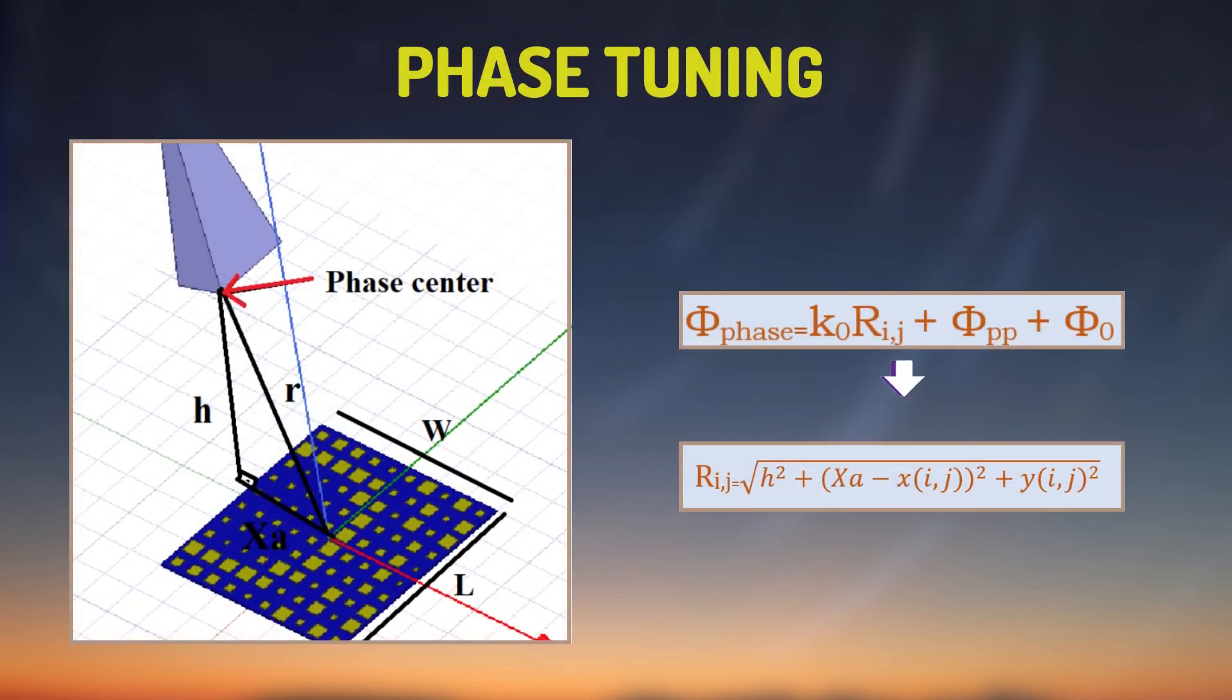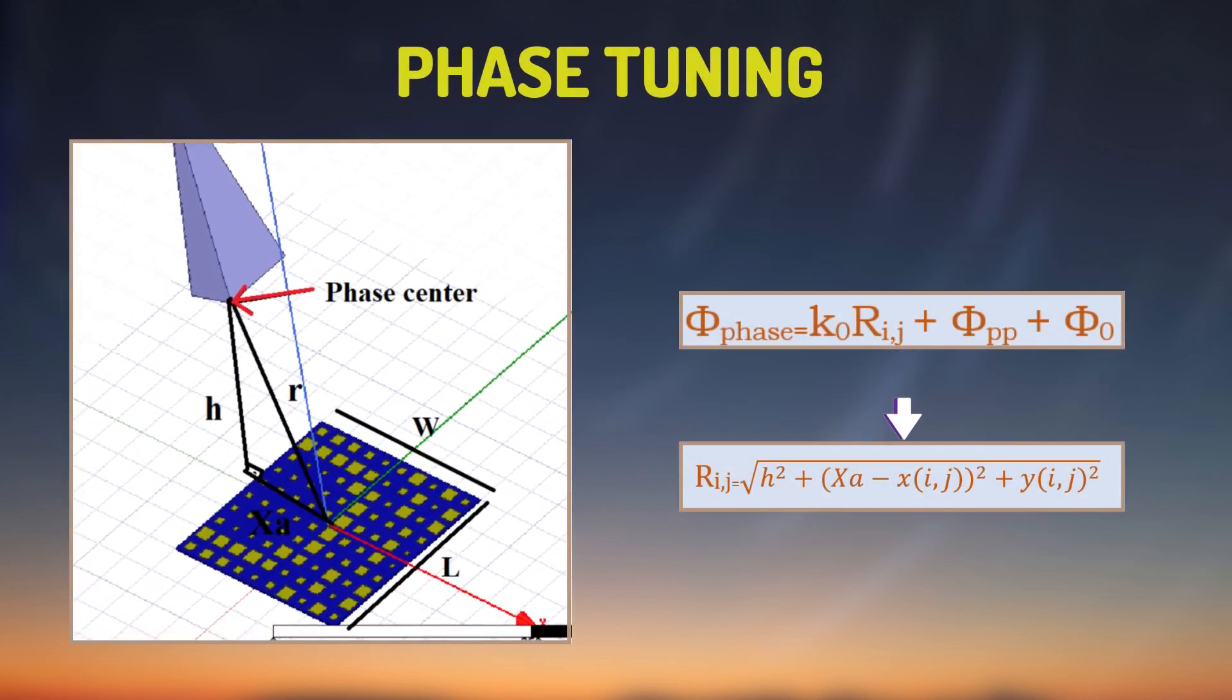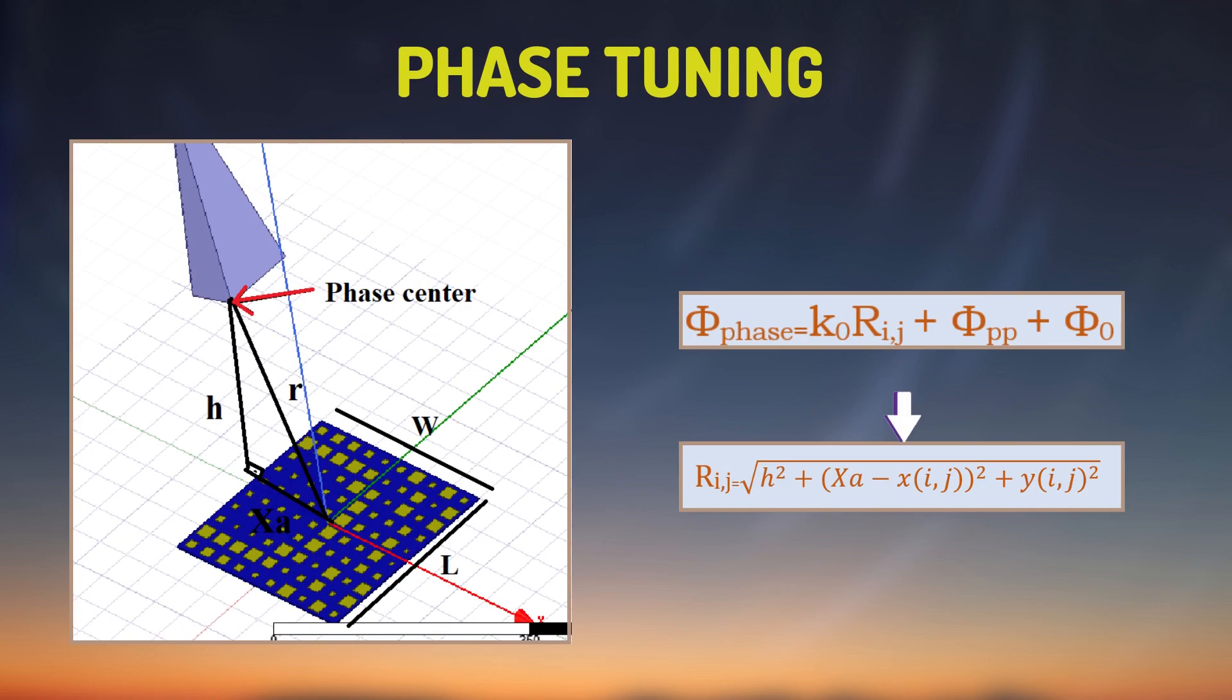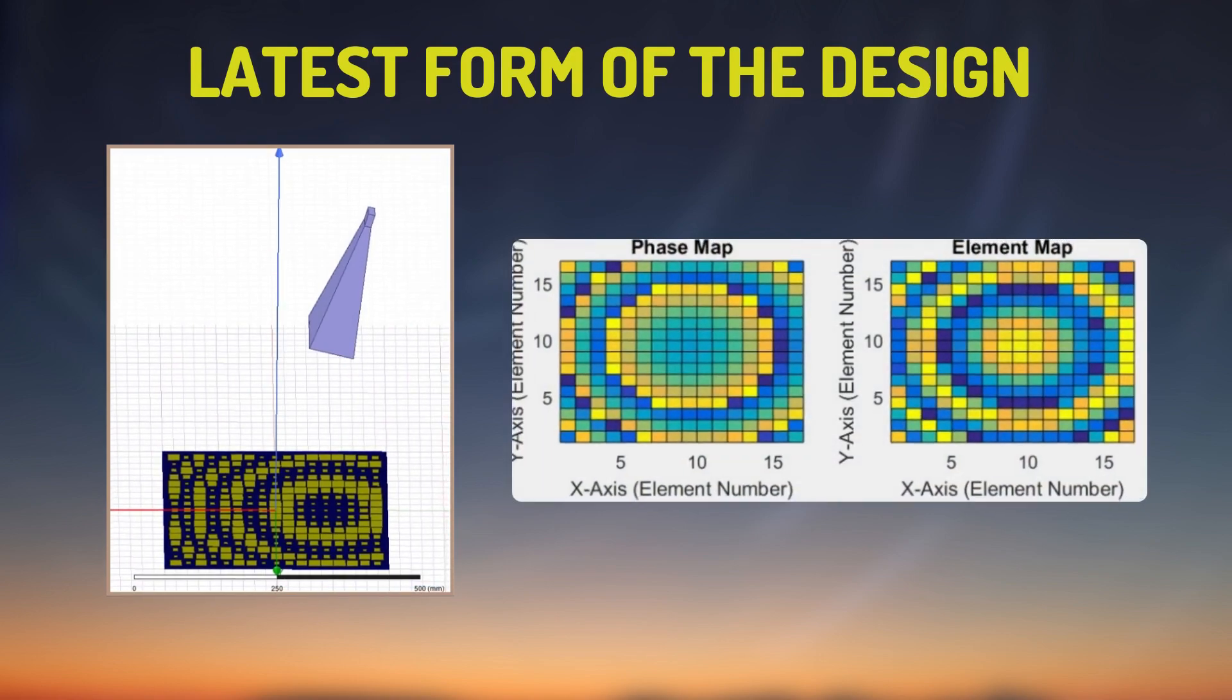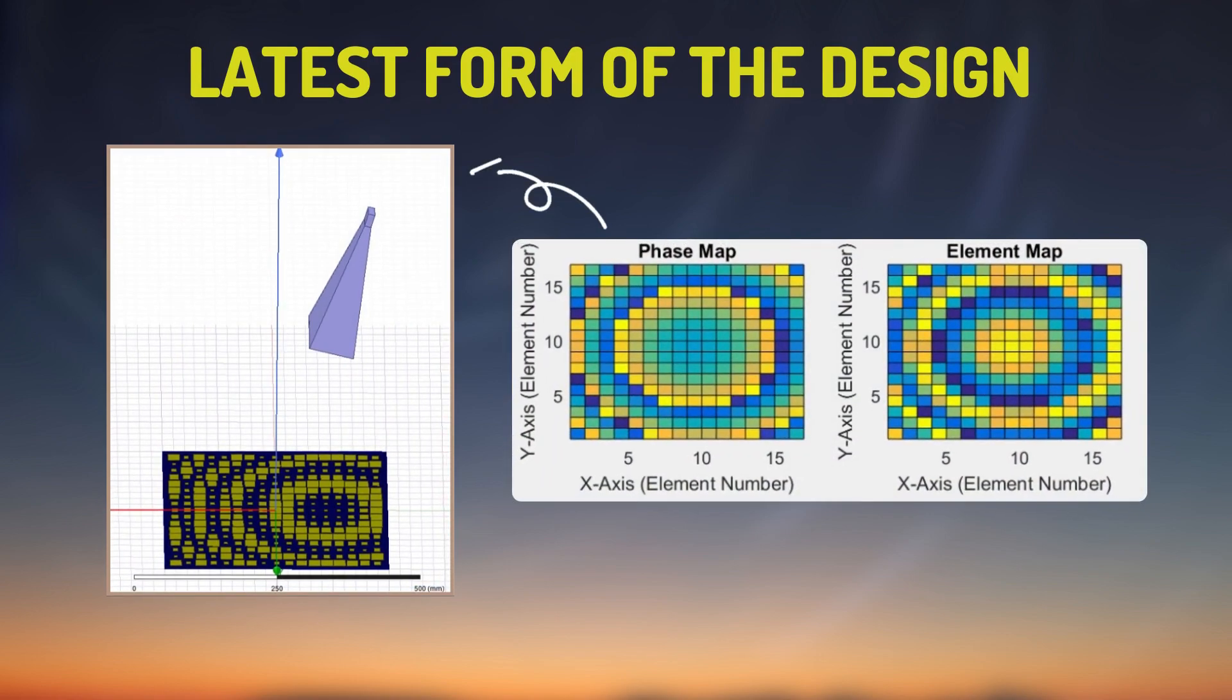If the main beam is directed at some specific angle, required phase on a unit cell can be calculated as follows. Here, R-value represents the distance between phase center of the horn antenna and a selected unit cell. After that, by using MATLAB program, phase tuning is achieved and radiation patterns are resulted.